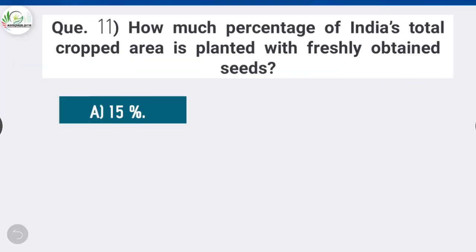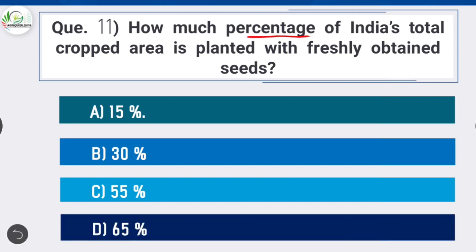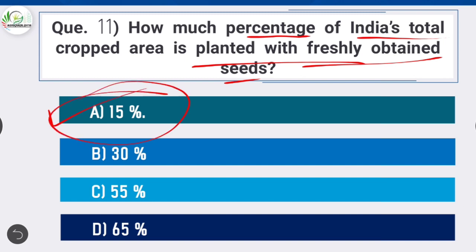Question 11: What percentage of India's total crop area is planted with freshly obtained seeds? Option A is correct: 15 percent. Because of a huge gap in demand-supply, India suffers from a dismal seed replacement ratio. Freshly obtained quality seeds are used for planting only around 15 percent of India's total cropped area each year. The rest of the cropped areas are planted with farm-saved seeds.